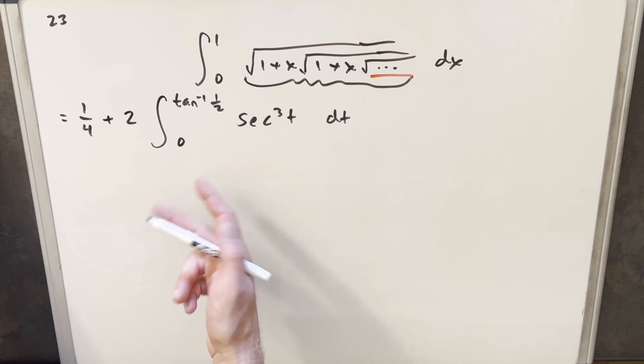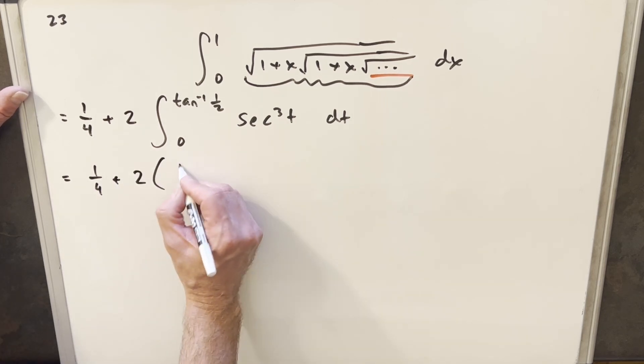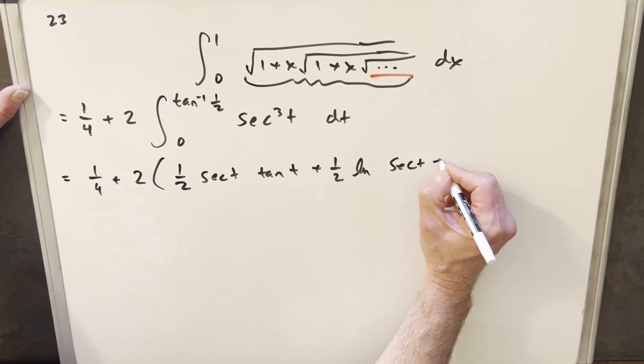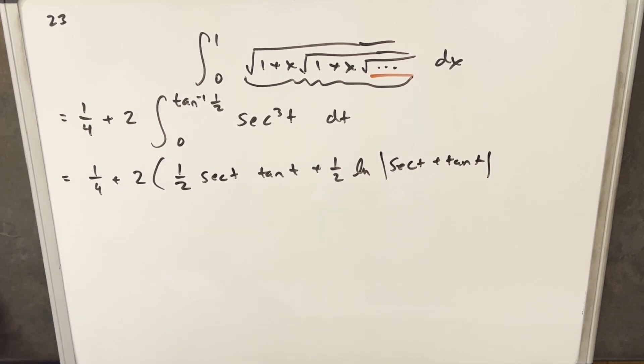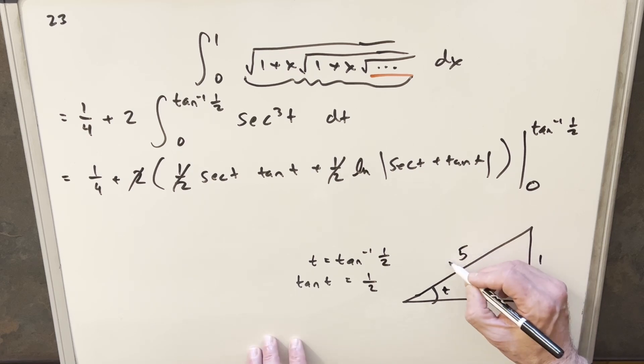From here now we're integrating secant cubed t. You could do integration by parts on this, but I'm actually just going to use the formula because we run into this one a lot. The integral of secant cubed t is going to be half secant t tan t plus half natural log secant t plus tan t absolute value. I'm going to cancel this 2 with this half and this half for a little simplification. Now it's time to evaluate this, but I want to deal with this inverse tan of 1 half. I'm going to draw my triangle. We're saying t equals tan inverse 1 half, that's the same thing as tan of t equaling 1 half. If we have our triangle with angle t, if tangent is 1 half, we're going to have opposite over adjacent 1 half. Let's solve for the third side using Pythagorean theorem. 1 squared plus 2 squared is 1 plus 4 is 5, so this is square root of 5.